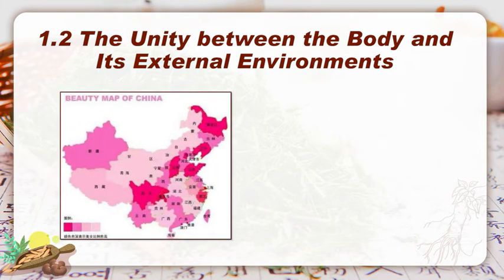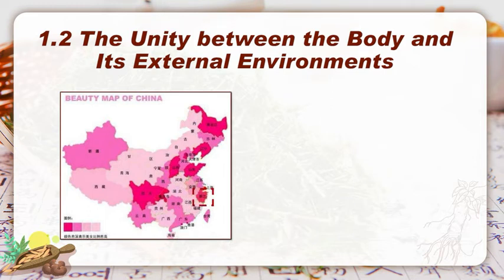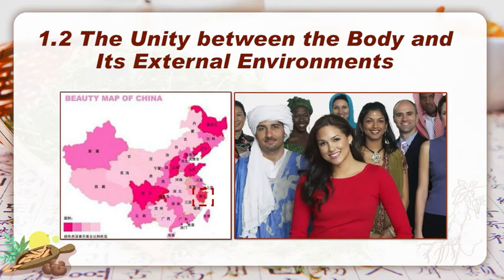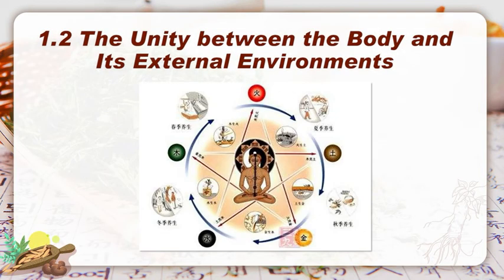It is a beauty map of China: the darker the color on the map, the more good-looking people you can find in that local area. This is Zhejiang province, where I come from, and I am very proud of the dark red color. This is a simple example showing that geography, weather, and other environmental factors impact the appearance of people. Not only looks — our health, living habits, and susceptibility to certain diseases are under the influence of the external environments where we live.